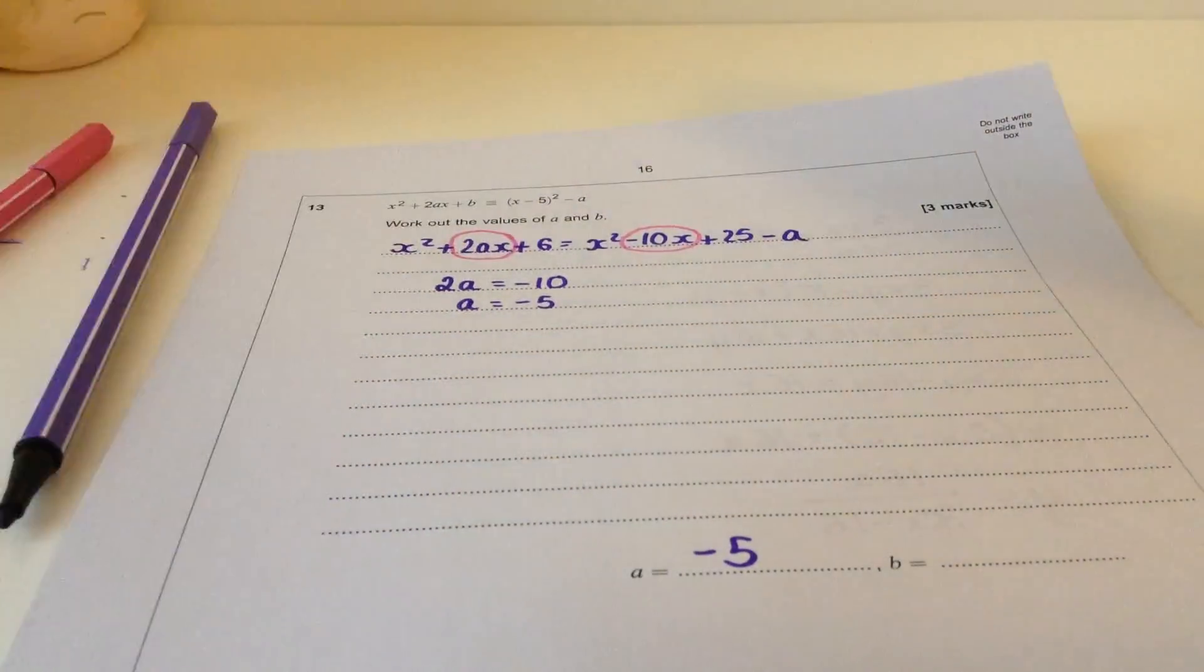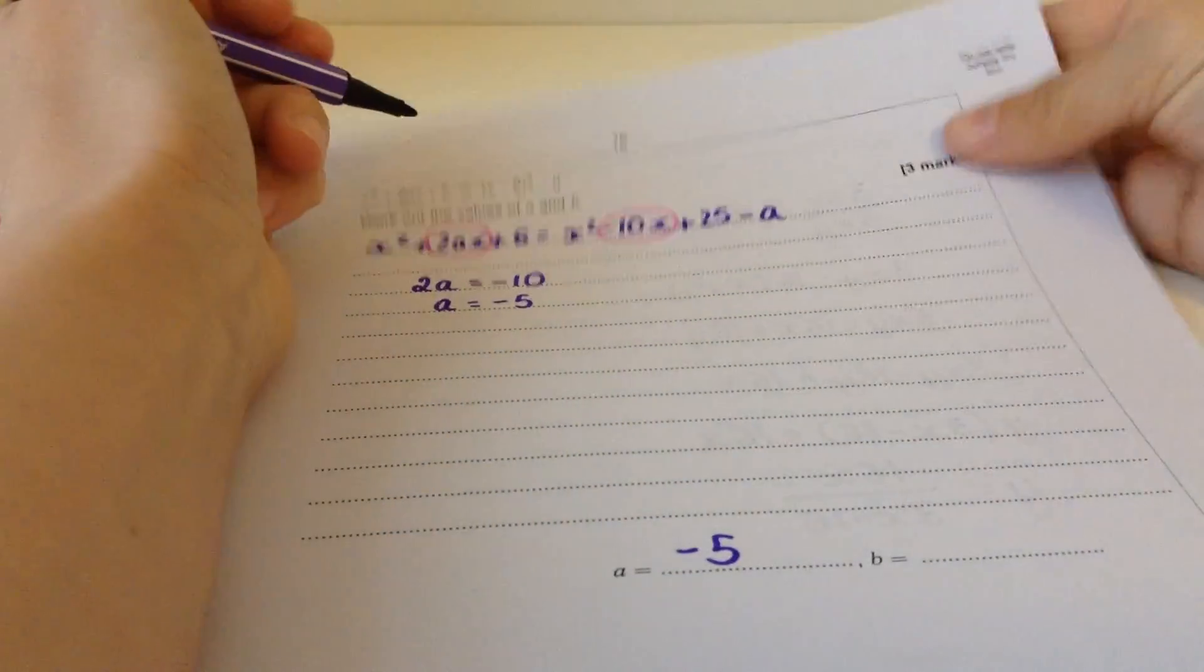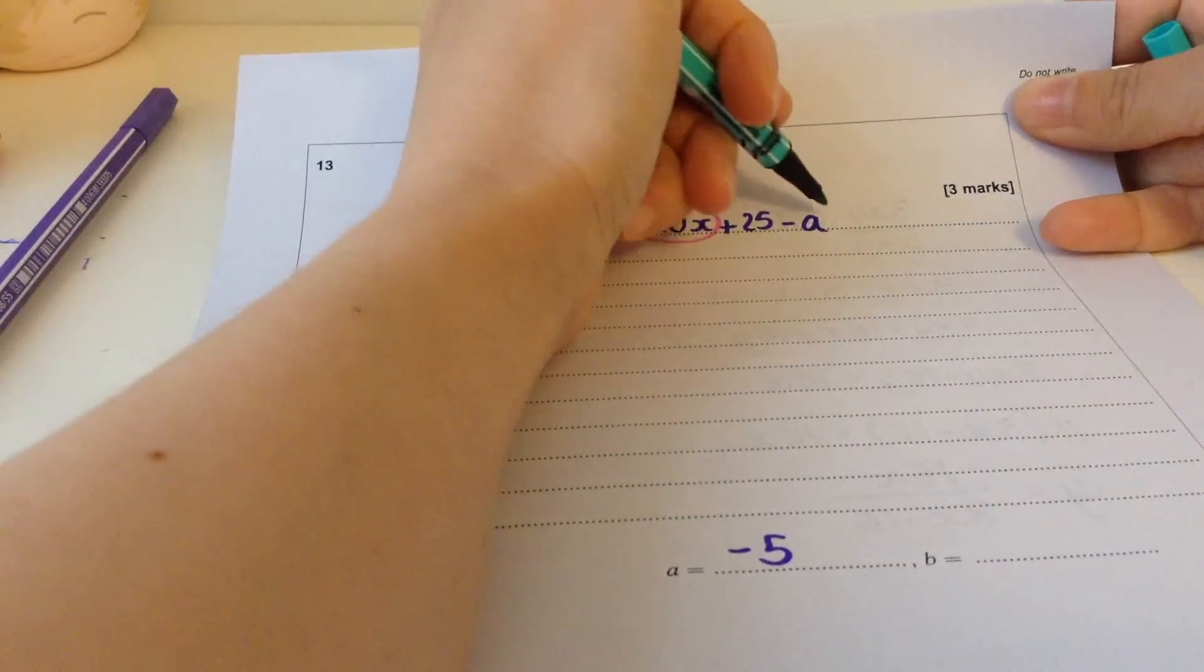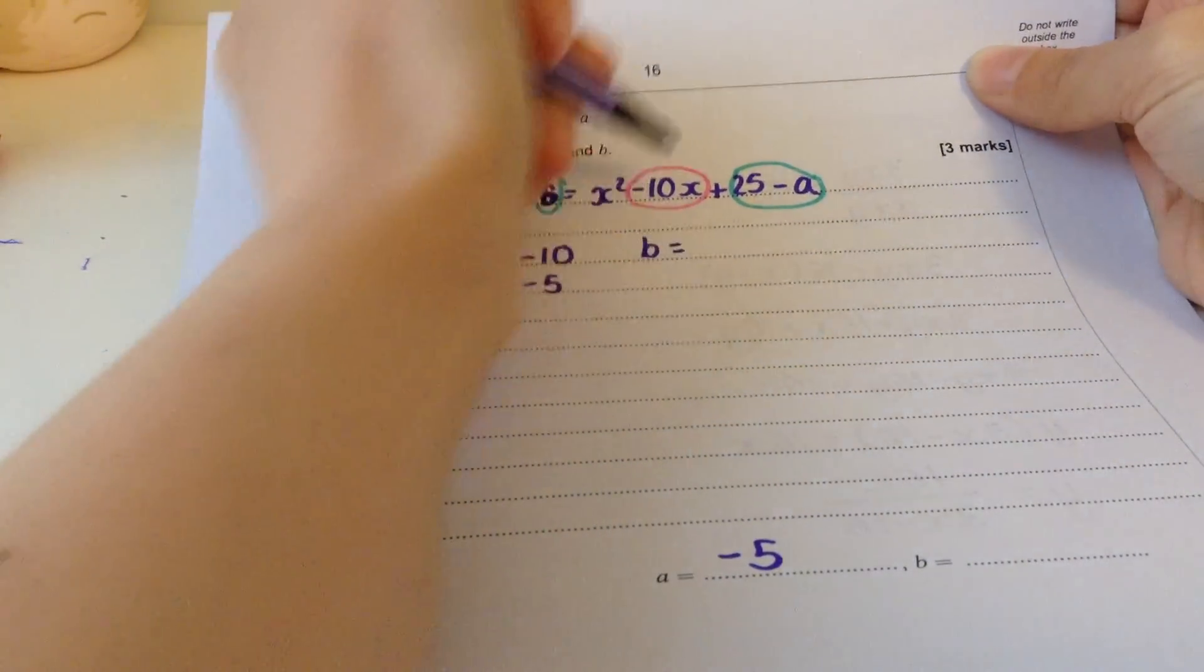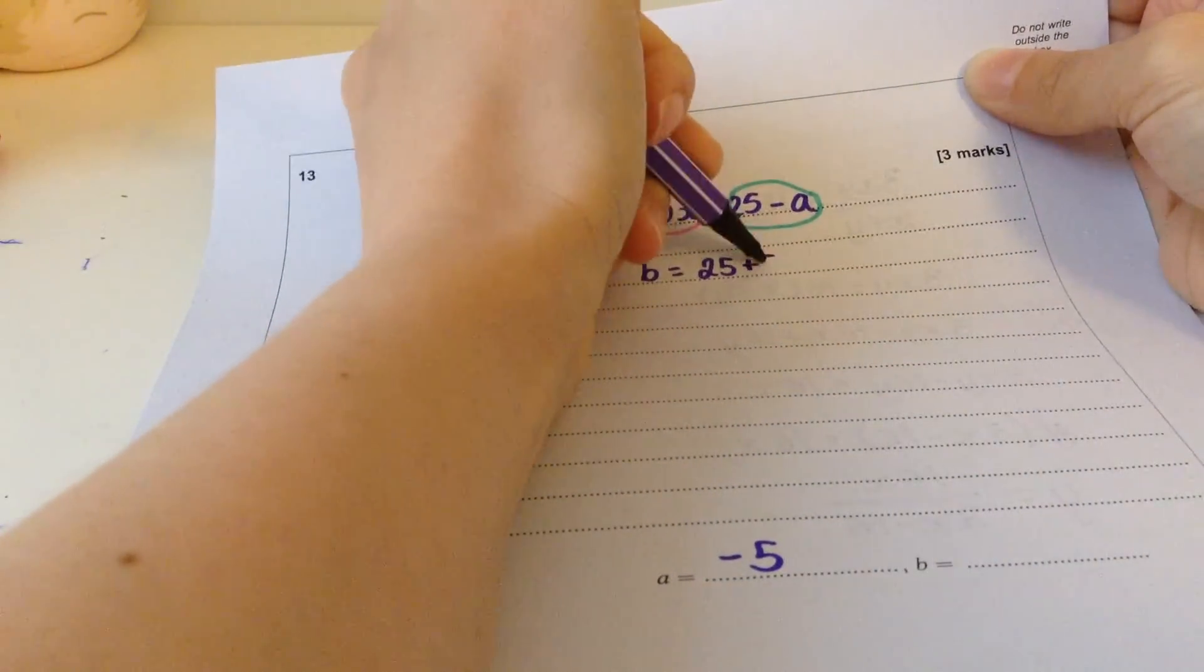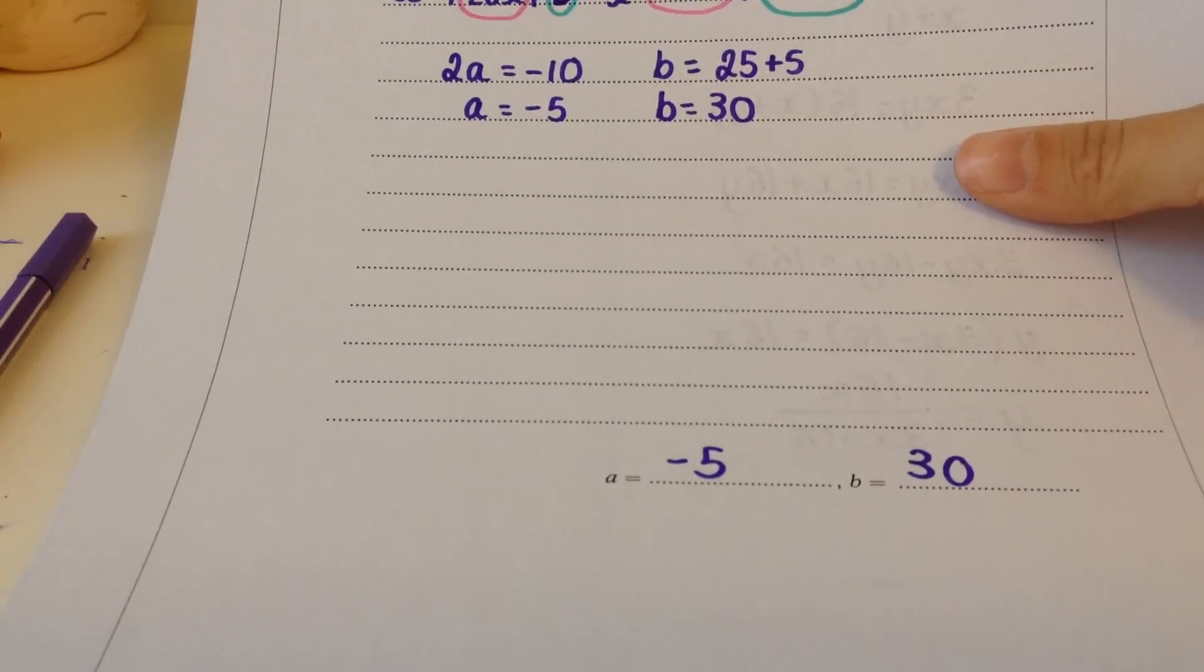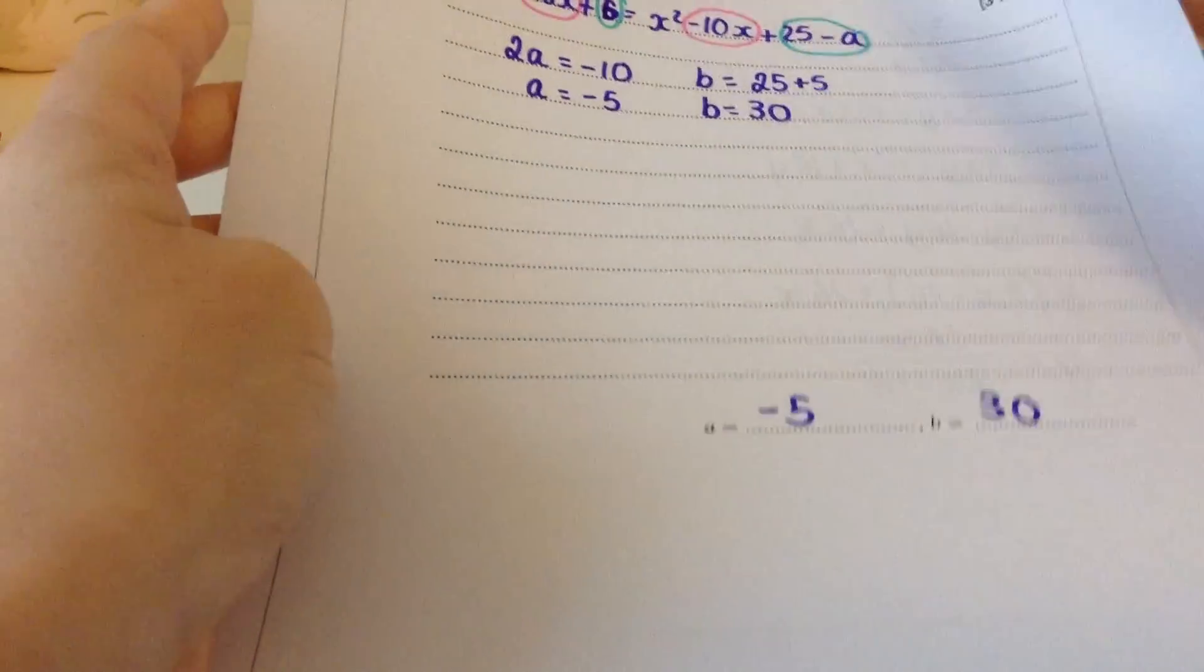Wait, where's b? Oh, that's a b, not a 6. If we compare the constants, the non-x bits, we've got that there and that there. So that means b has to equal 25 minus a. A was minus 5, so 25 minus minus 5 is going to be 30. So b is 30. I'm just seeing if the examiner's report, there's anything interesting, but it isn't really.